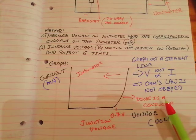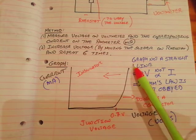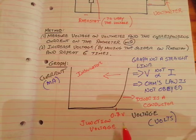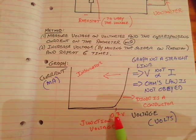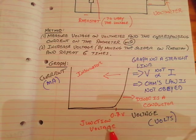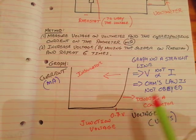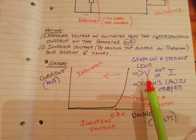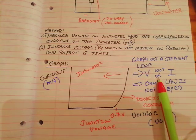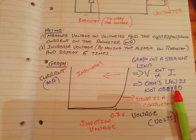You have to know the shape of that graph and that the point where the current starts shooting up is known as the junction voltage. You also have to know the current is usually measured in milliamps, and that the graph is clearly not a straight line — therefore voltage is not proportional to current, and therefore Ohm's law is not obeyed by a semiconductor diode.